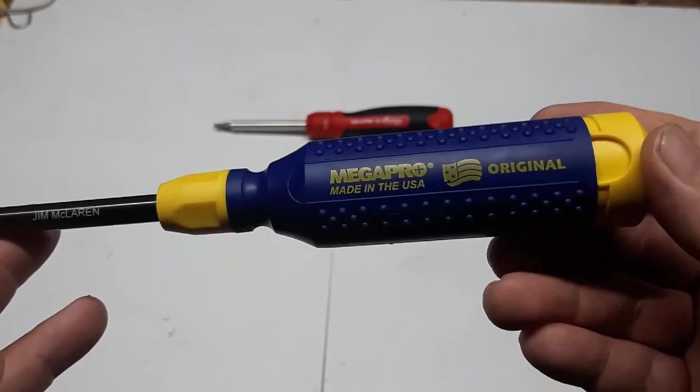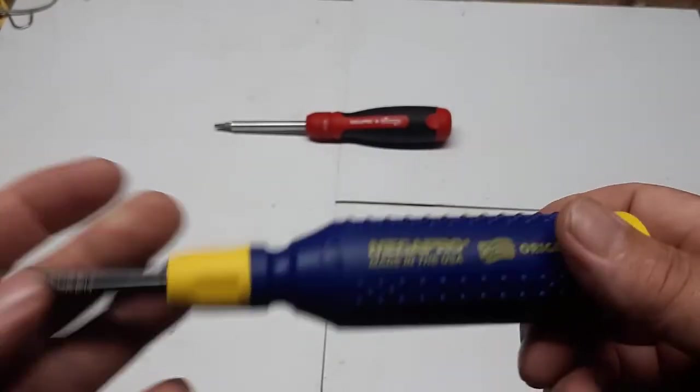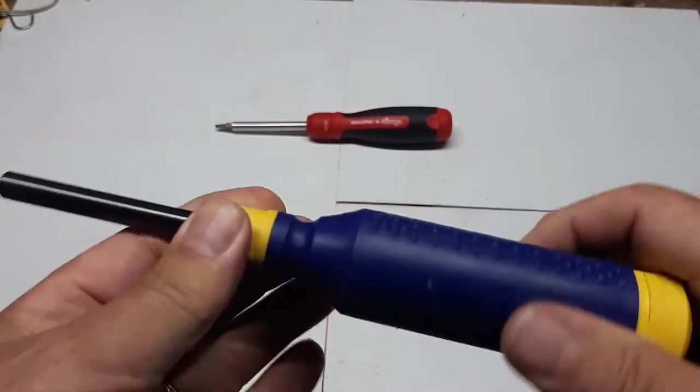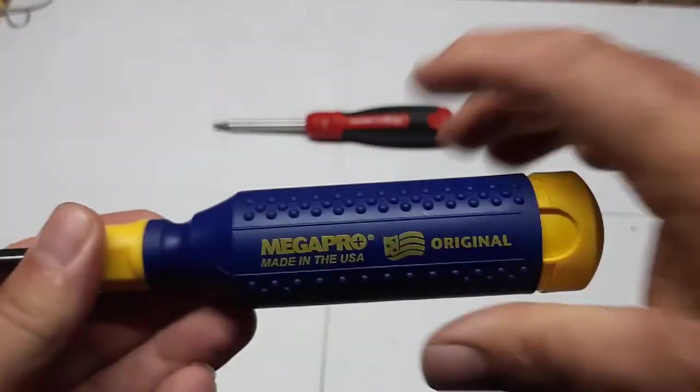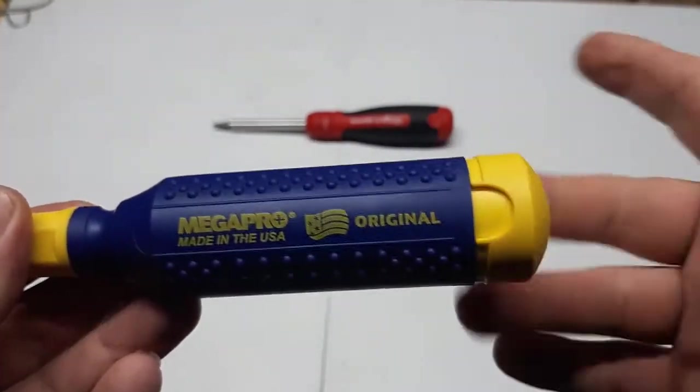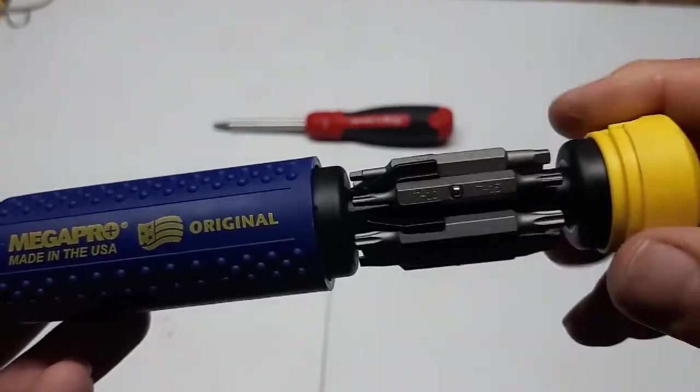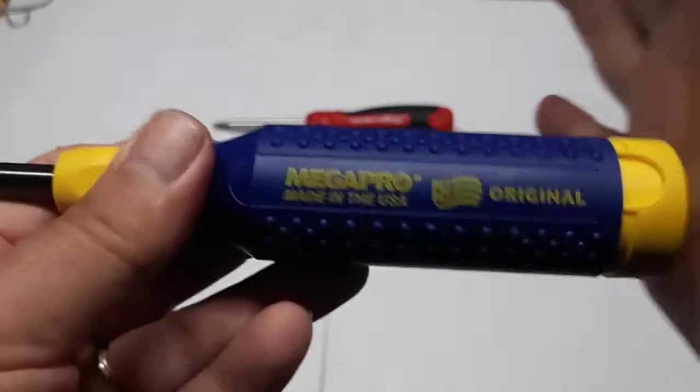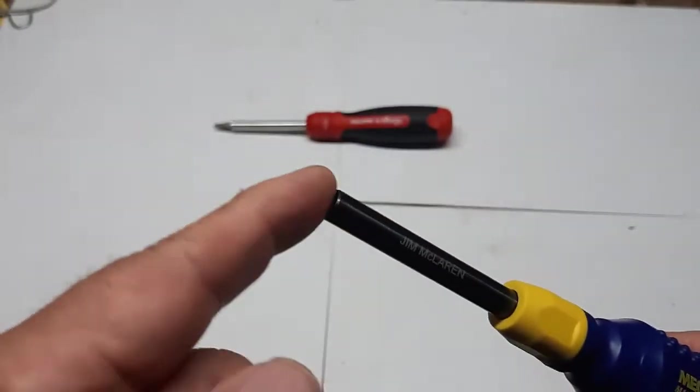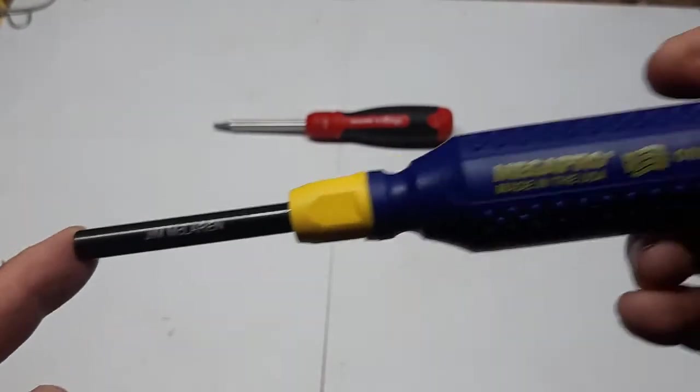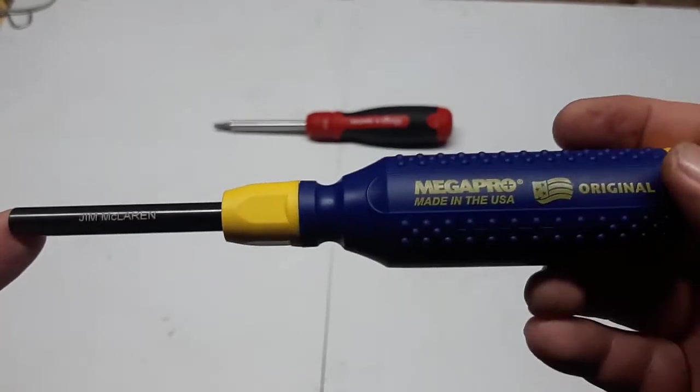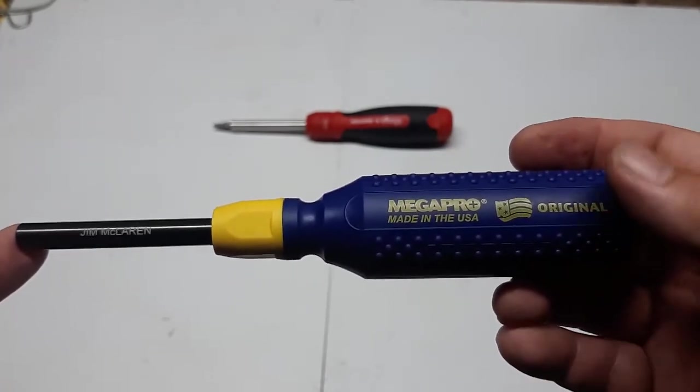So we've talked about the Megapro Original screwdriver, its nice features—the collar here that turns, the dimples on it so you get a good grip, the solid screwdriver. I like the fact that it's easy to get out your bits here. You can see them all. It's got the ball bearing that holds them in place, and it's got the quarter-inch hex shaft. I'd like to thank Alicia again for sending me this screwdriver, very thoughtful of you to put my name on here.